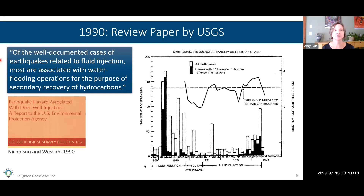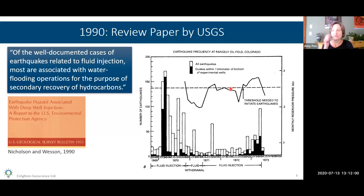That figure came from a review paper published by the U.S. Geological Survey in 1990. At that time they concluded that most well-documented cases of induced seismicity were associated with water flooding operations for enhanced hydrocarbon recovery. A good example is the Rangeley oil field in Colorado, where seismicity rate went down when fluid was withdrawn and up when it was injected. They were actually able to calculate the pressure threshold above which you were likely to initiate earthquakes.